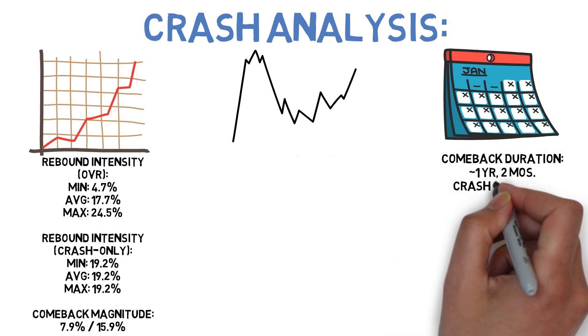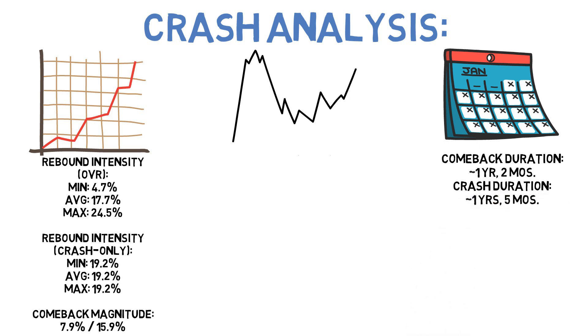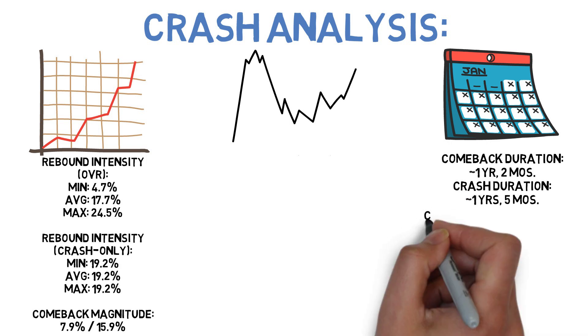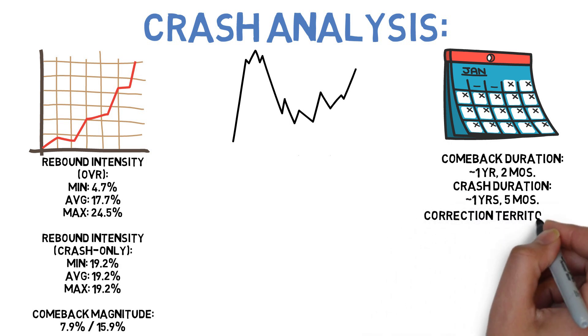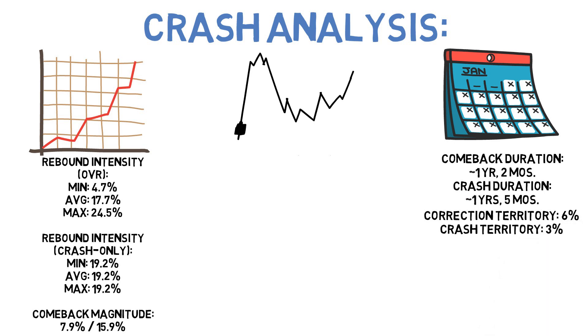On average, it took a little over one year and one month for the Swenson portfolio to set new highs after bottoming out. This means that, on average, downturns lasted roughly one year and five months for this strategy. It spent 6% of its time in correction territory and just 3% of its time in crash territory.